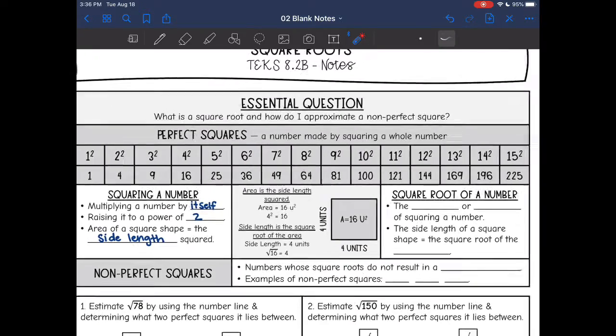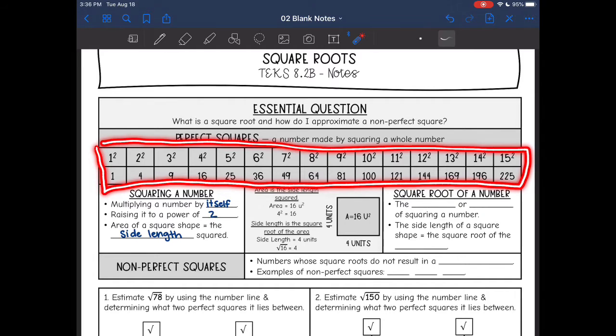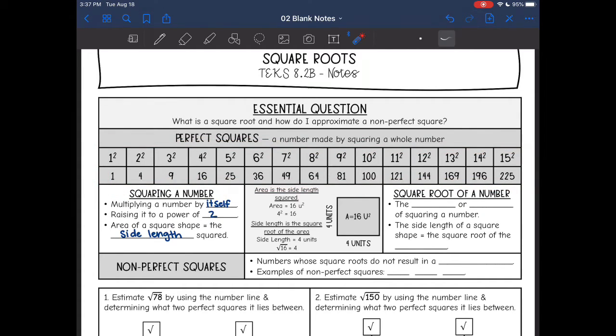These right here up top are the first 15 perfect squares. So 1 squared, 2 squared, and so on. These numbers are special because whenever you take the square root of them, you get a whole number.